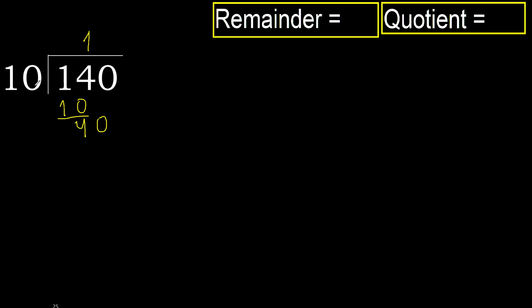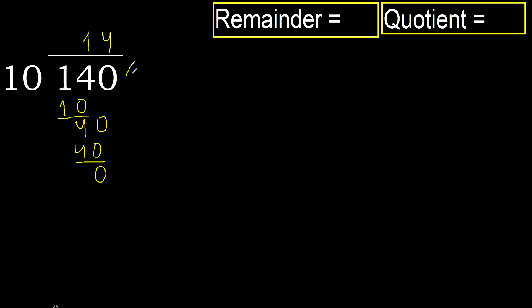40. 10 multiplied by 4 is 40 — ok, is not greater. Subtract: 40 minus 40 is 0. Next.